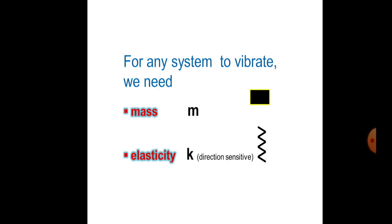For any system to vibrate, we need a mass M and elasticity k. These are the two essential elements required for any body to vibrate.